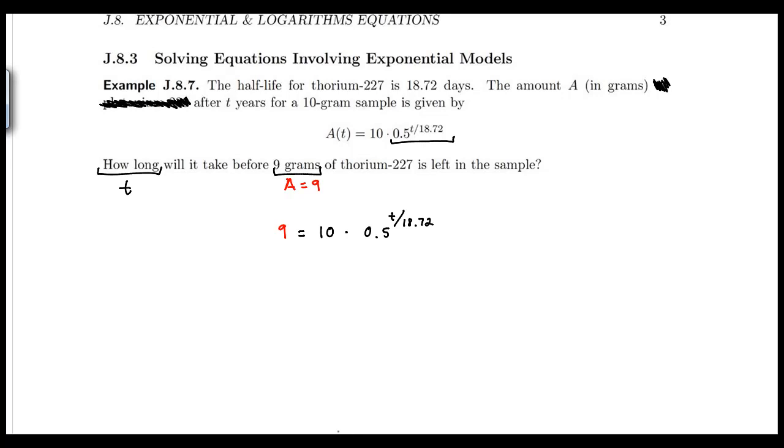So the first thing I want to do, as I did before, is isolate the exponential part. This I need to isolate. So in order to do that, I have a coefficient of 10. I can easily isolate the exponential part by dividing each side by 10. And so I get 9 tenths equal to 0.5 to the T over 18.72.